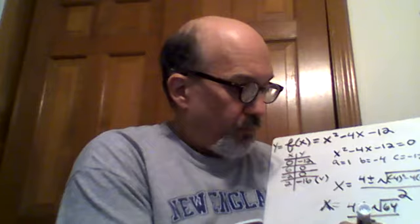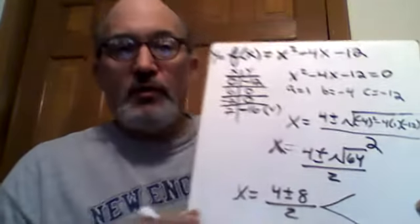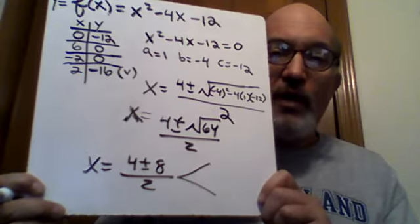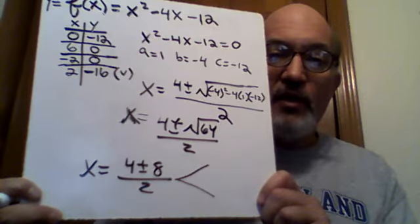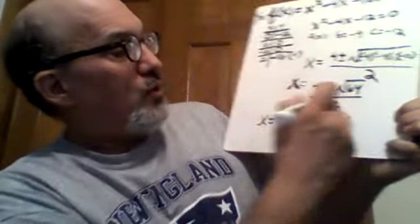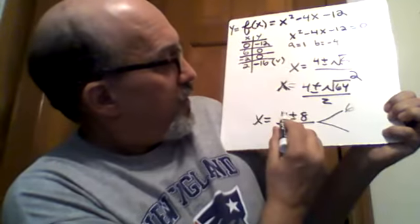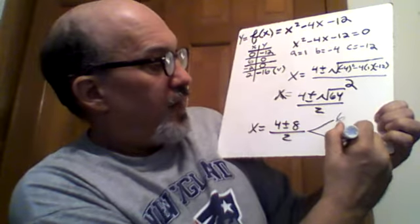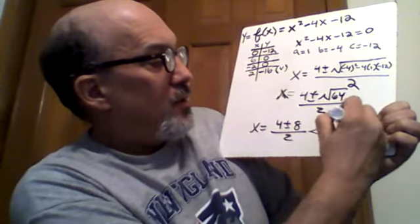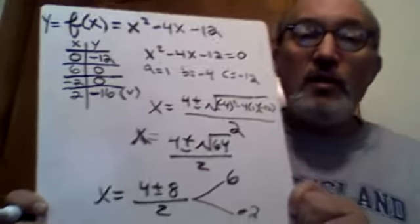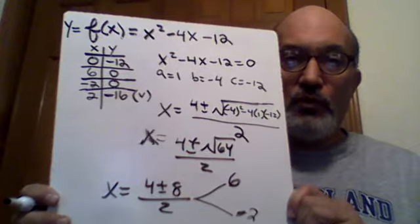So once again we follow the two paths just like we did earlier when we were completing the square. We follow the two paths and the plus path gives us 4 plus 8 over 2, 12 over 2 or 6, and the minus path gives us 4 minus 8 or negative 4 over the 2 which is negative 2. The same two results that we got previously by factoring and then also by completing the square.